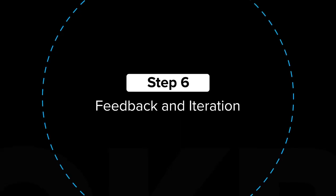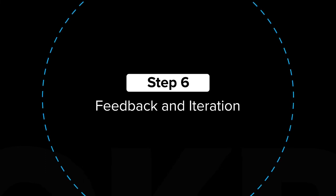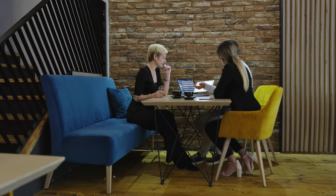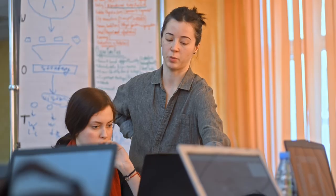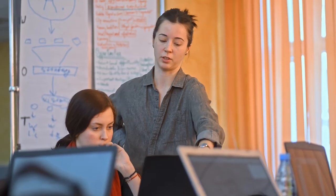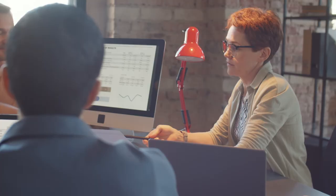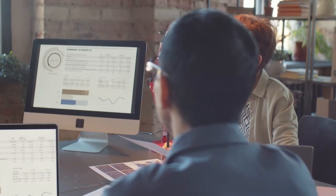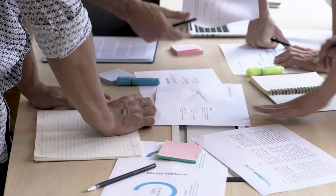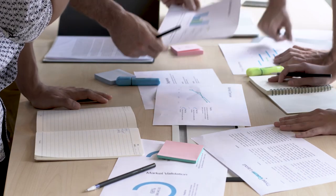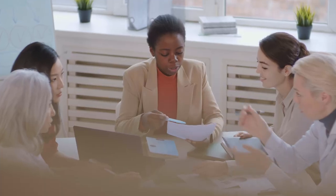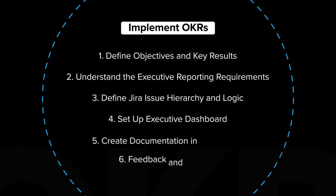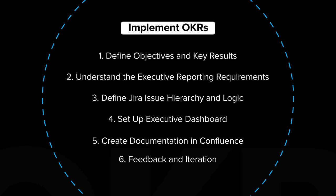Step 6: Feedback and Iteration. Since feedback is a vital element of OKR implementation, it helps to start small rather than aim for an all-out launch. Roll out OKRs and transition one team to the new process. Their feedback will help you make incremental improvements and successfully launch the initiative across the entire organization. These steps should help you introduce OKRs to your business and create alignment between strategy and operations.